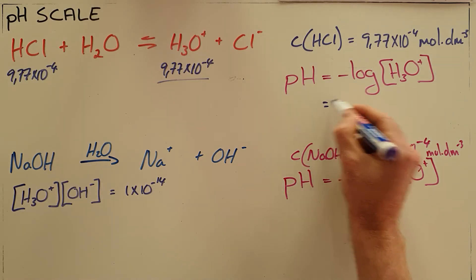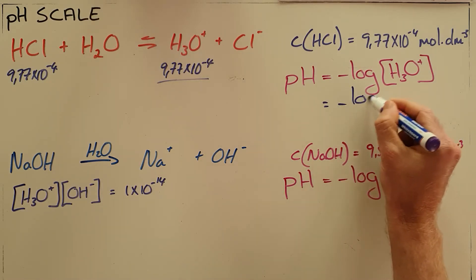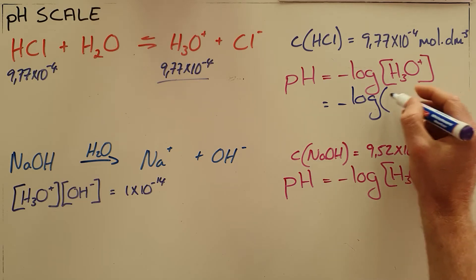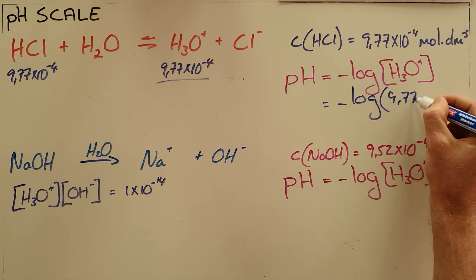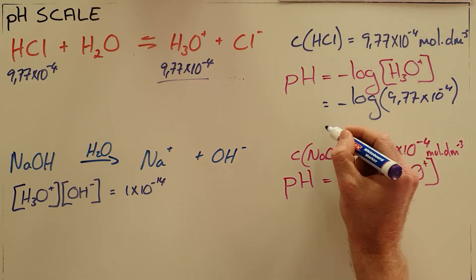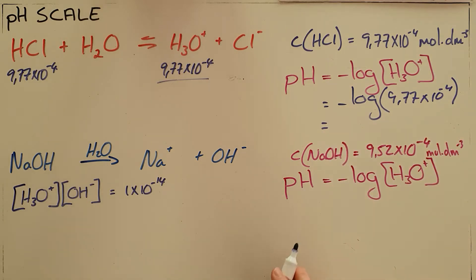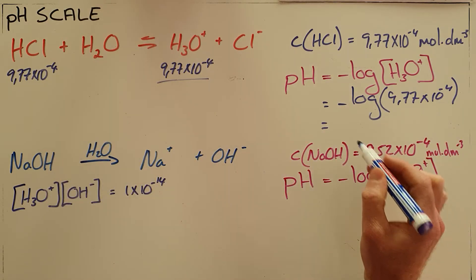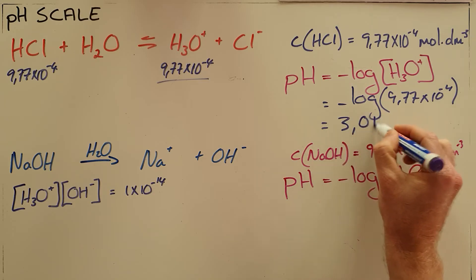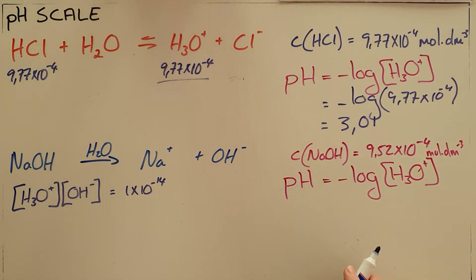Which means that we can use our pH calculation over here, the negative log of that hydronium concentration, 9.77 times 10 to the minus 4 moles per cubic decimeter, to find that the pH for this hydrochloric acid solution is 3.01, which we can see is a pH of a fairly strong acid.